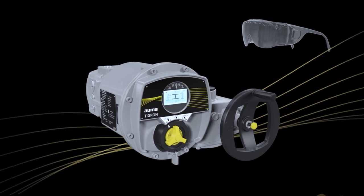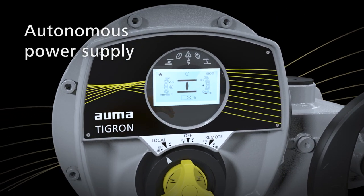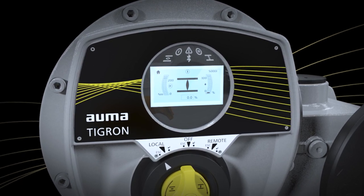In case of power supply failure, Tigron transmits the position data to the staff on site and the operator in the control room.